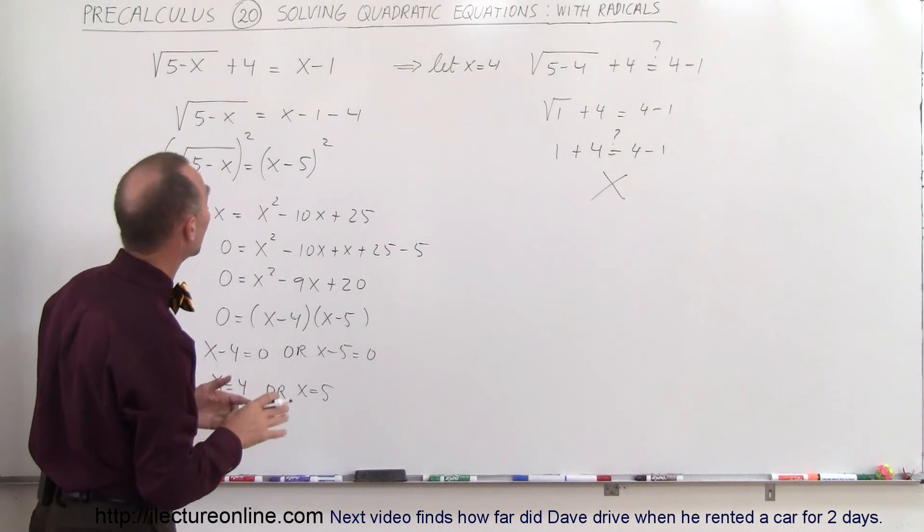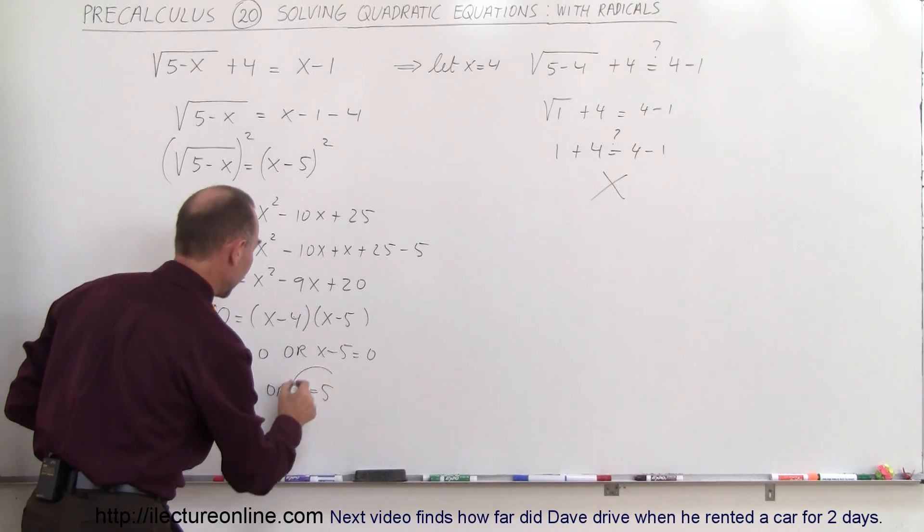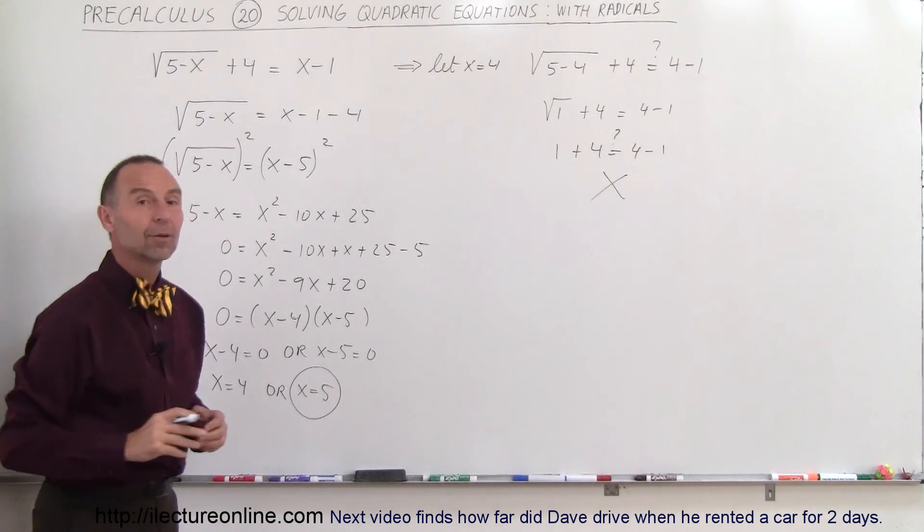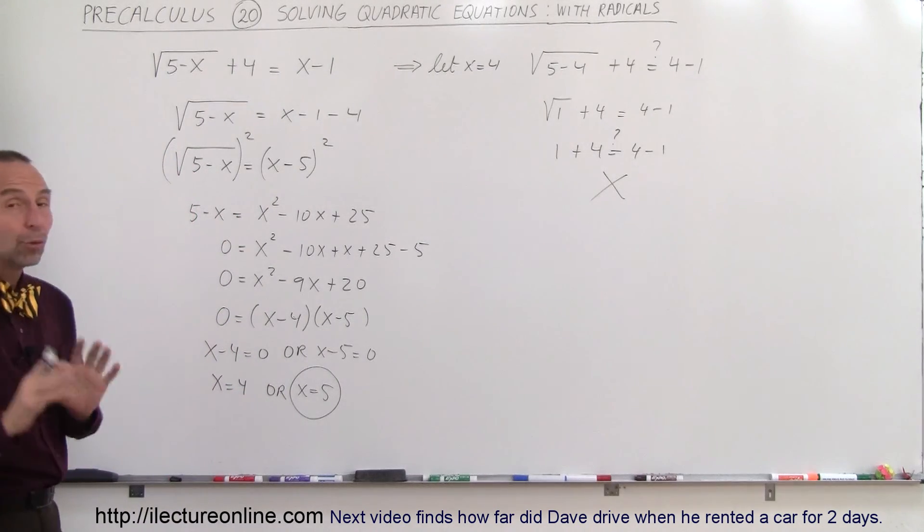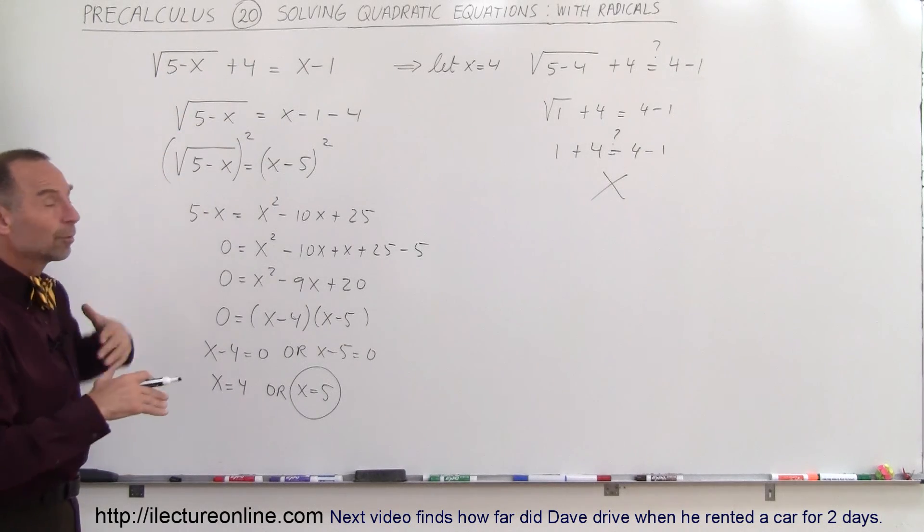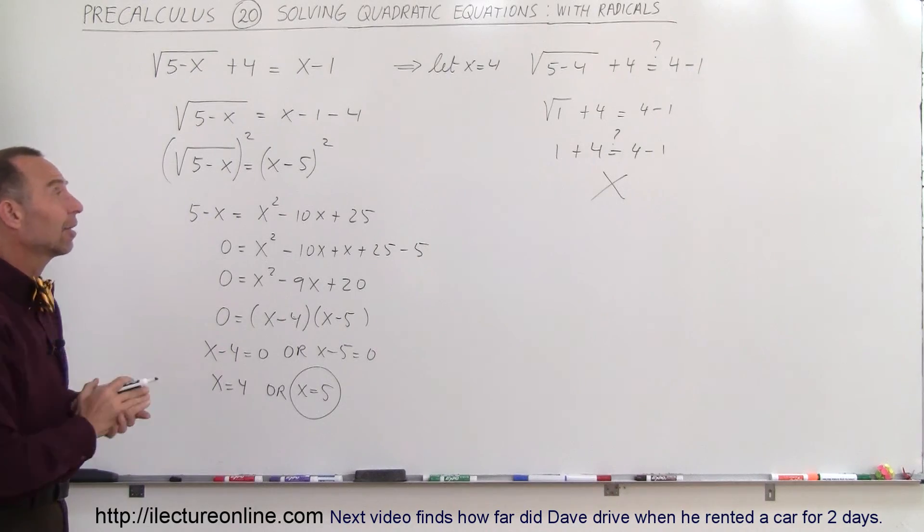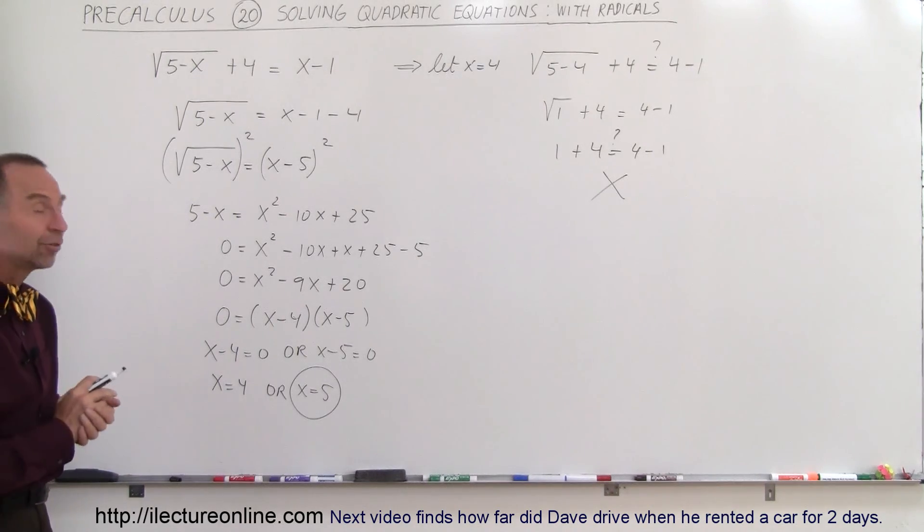Therefore, x equals 4 is not a valid answer for this particular problem. So therefore, x equals 5 would be the proper solution to this problem. The reason why we need to check the answer is because when we square both sides, we sometimes introduce a solution that is not valid to the problem. In this case, that's not valid. So x equals 5 is the proper solution.